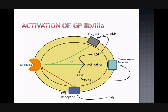By looking at the simplified diagram, we see three of the factors we will discuss in further detail in this presentation. ADP and TXA2 are involved in the activation of GP2B3A, and PGI2 exhibits the opposite effect that ultimately leads to the inactivation of GP2B3A.